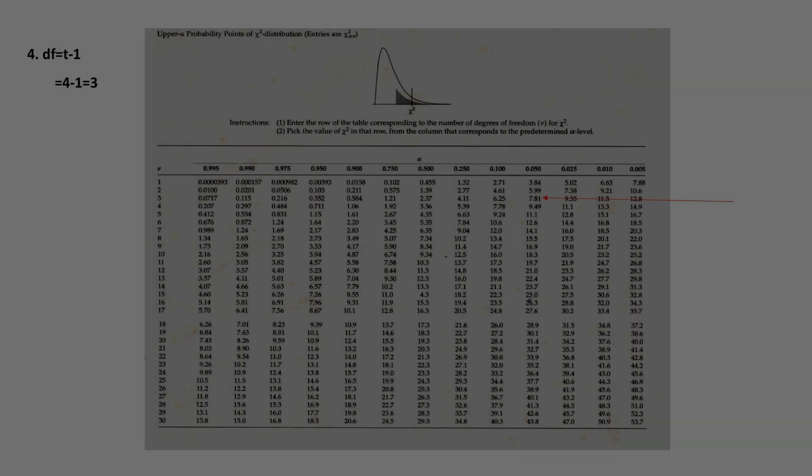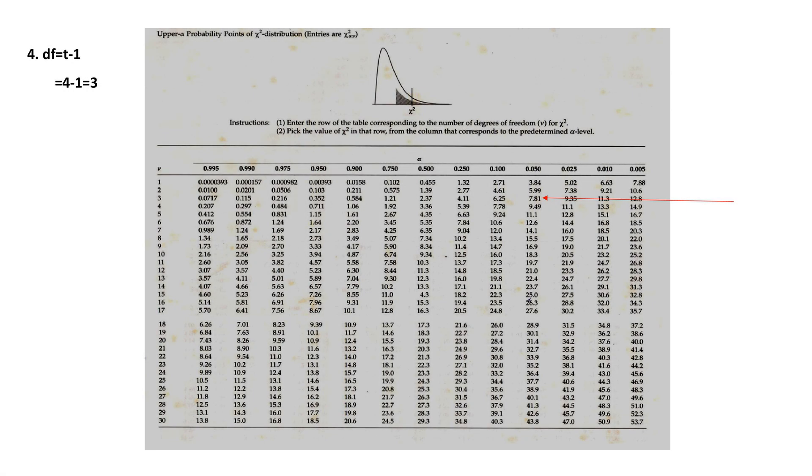Then, the next step is calculating the degrees of freedom. It is T minus 1. For our sample, 4 minus 1 is equal to 3.